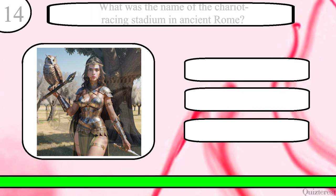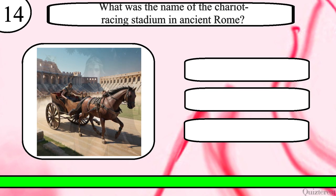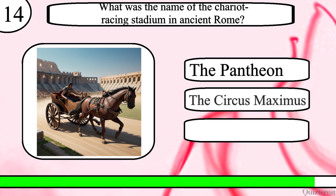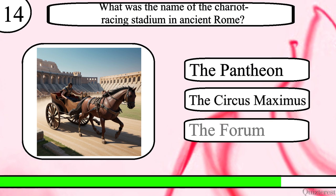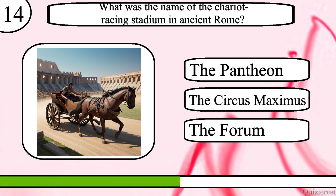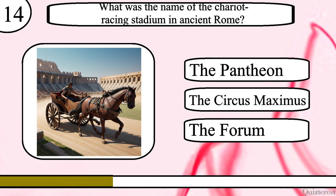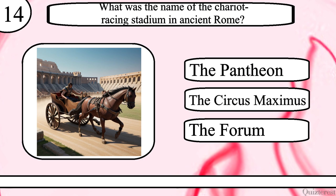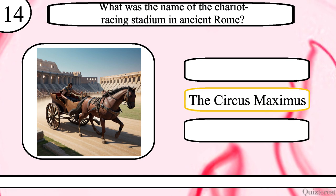Question 14. What was the name of the chariot-racing stadium in ancient Rome? The Pantheon, the Circus Maximus or the Forum? The correct answer is Circus Maximus.